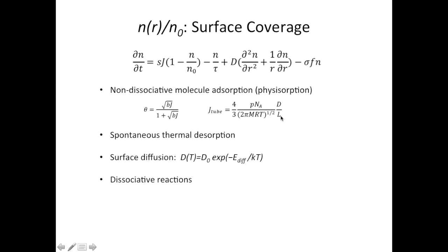D is the diameter of the injection tube and L is the length. The second process is spontaneous thermal desorption — it's different from electron-stimulated desorption because it's thermally activated. The third process is also thermally activated: surface diffusion. Normally there's a proportional relationship between the diffusion and desorption activation energies, but for physisorption the atoms on the surface are not confined by the underlying substrate lattice, so this proportionality no longer holds. The last process is dissociative reactions, as discussed in the previous slides. By combining all these processes together, we can obtain the surface coverage.